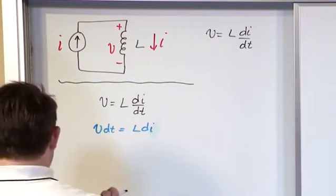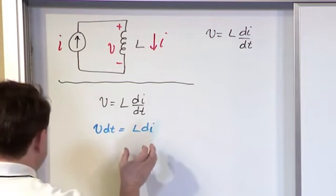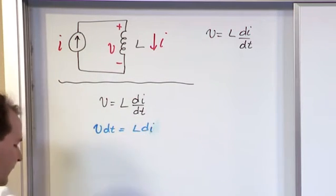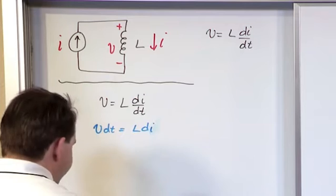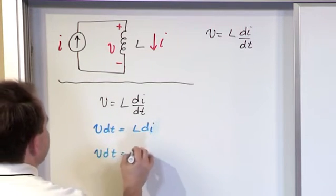So because we've done that, then what we can do next is ultimately what we're trying to do is we're trying to get i by itself. We're trying to solve for i. But i is inside of a derivative. So what we really need to do, let me rewrite this again, V dt is equal to L di.